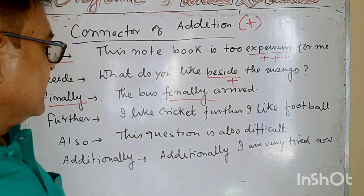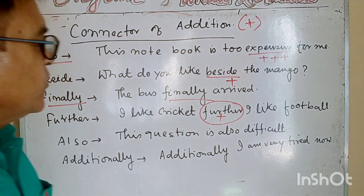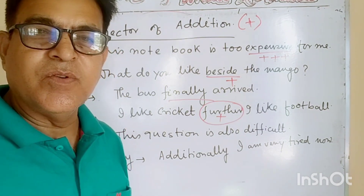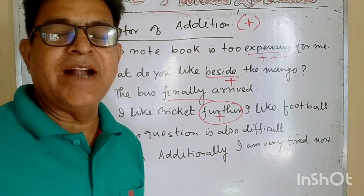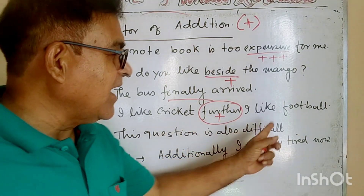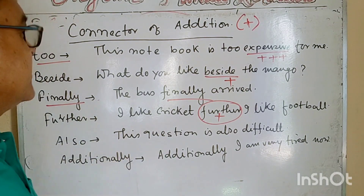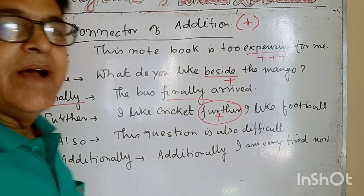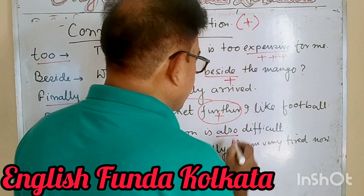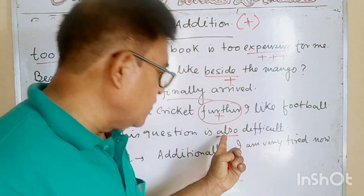I like it. Further, I like it. 'Also' is a connector of addition. For example: 'This question is also difficult.' Also, this question is also difficult — showing addition with 'also.'